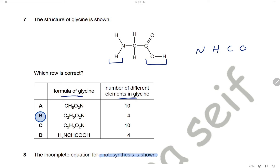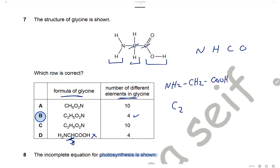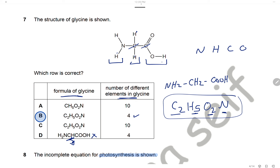For the molecular formula of glycine: we have two carbons (C2), five hydrogens (H5), two oxygens (O2), and one nitrogen (N). The molecular formula is C2H5O2N. Checking the structural formula, one option is missing a hydrogen — only CH instead of CH2 — so that is wrong. The only correct answer is B.